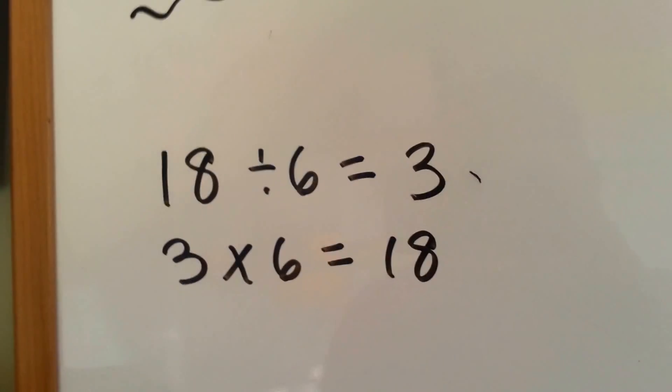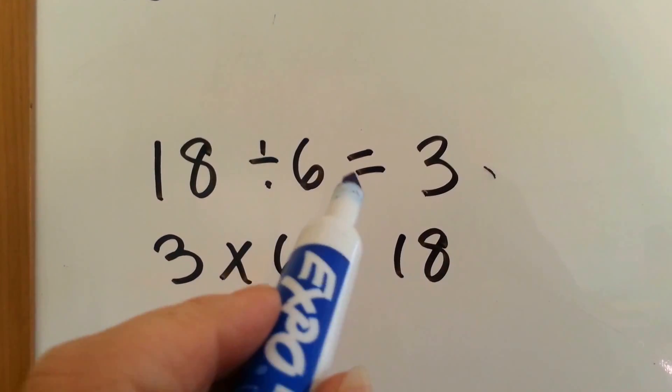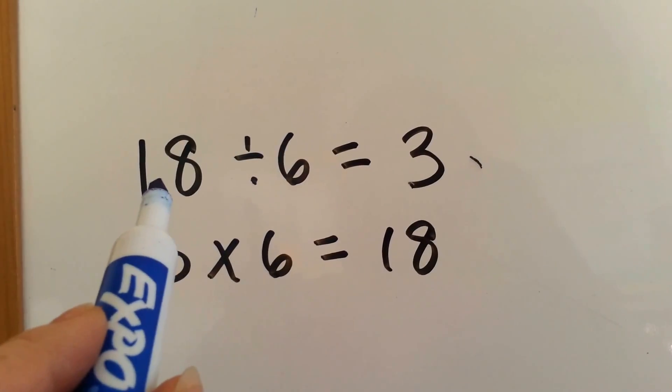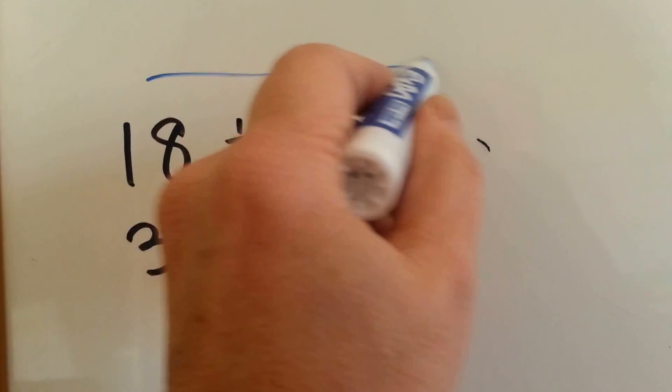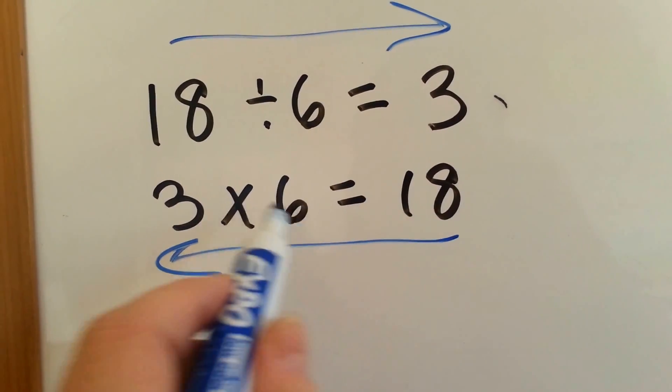Let's take a look at this. When you've got 18 divided by 6, it equals 3. You can turn this around and go this direction, and say 3 times 6 equals 18. See? 18 divided by 6 is 3.